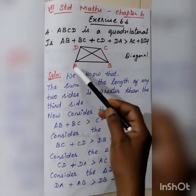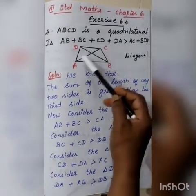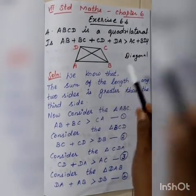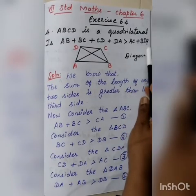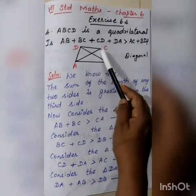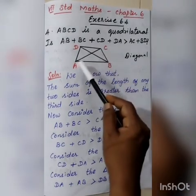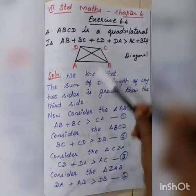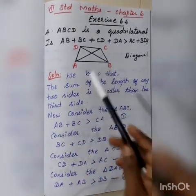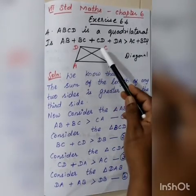Consider the first triangle ABC. Its three sides are AB, BC, and CA. Any two sides added — AB plus BC — is greater than the third side CA. We verify: AB is 2.6 cm, BC is 1.5 cm, and AC is 2.5 cm. So 2.6 plus 1.5 equals 4.1, which is greater than 2.5. This is equation 1: AB plus BC is greater than CA.